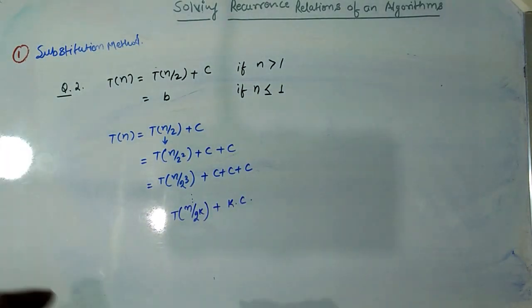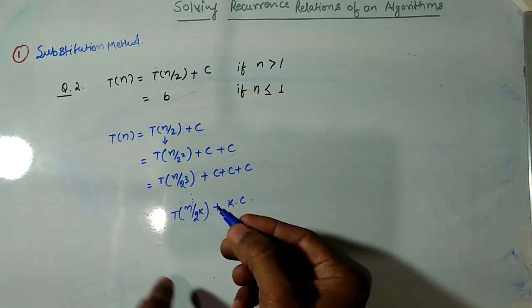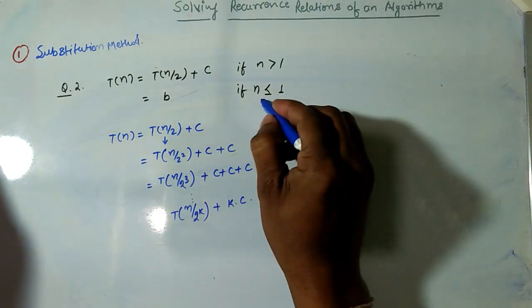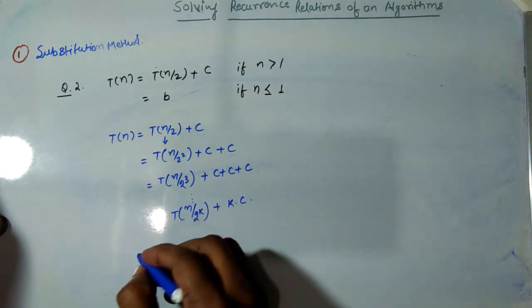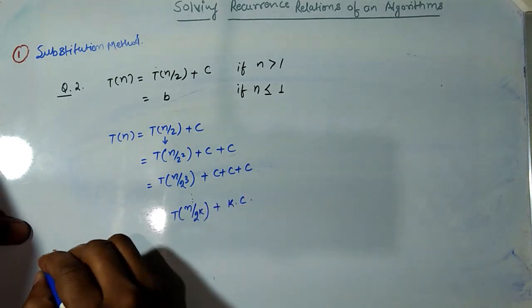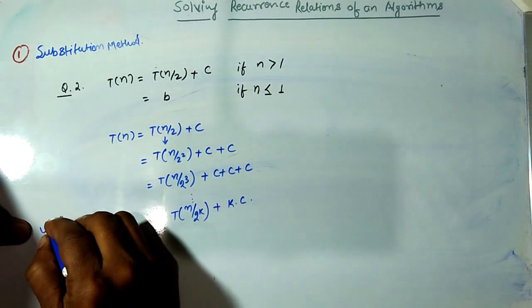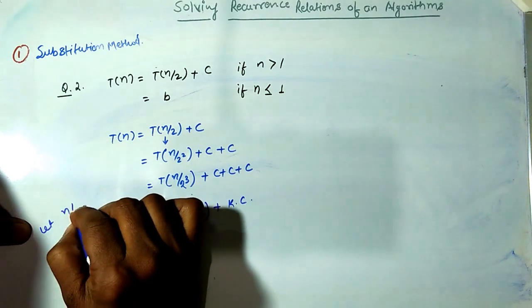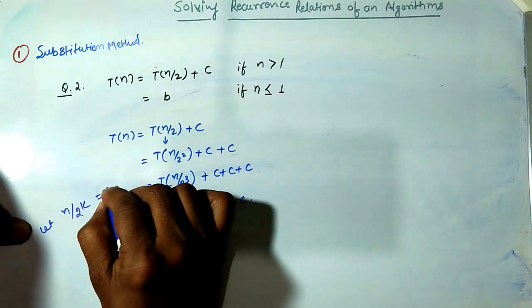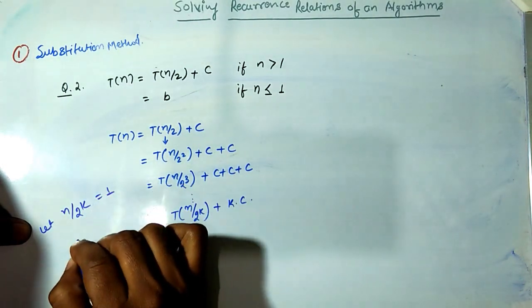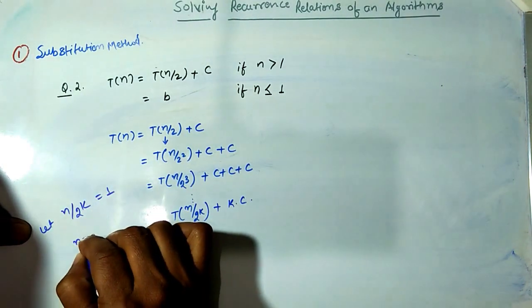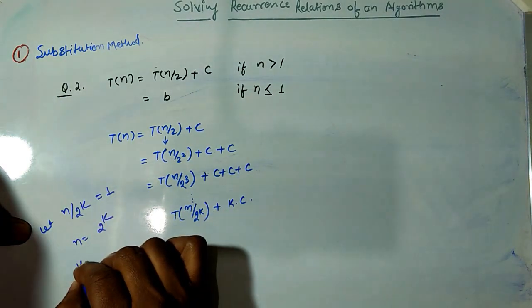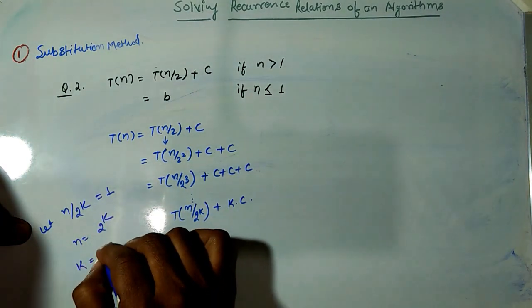Since the base case is n = 1, we assume n/2^k = 1, meaning n = 2^k, so k = log n.